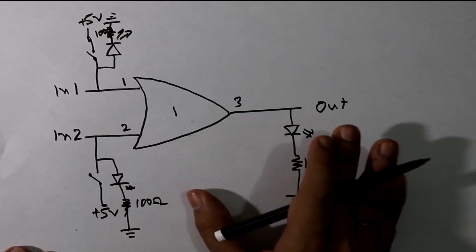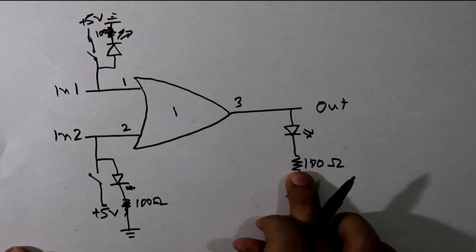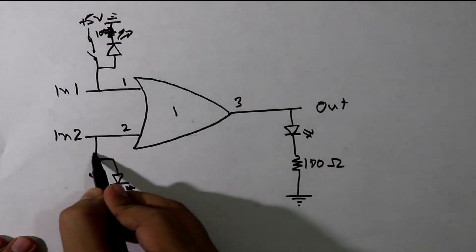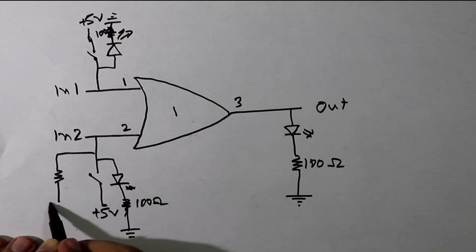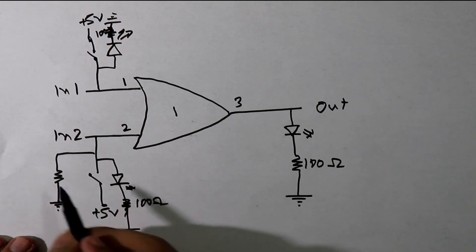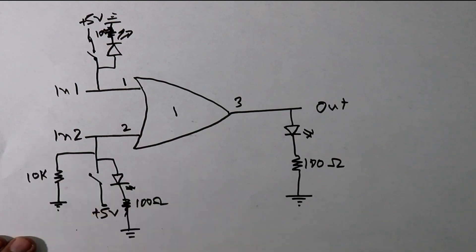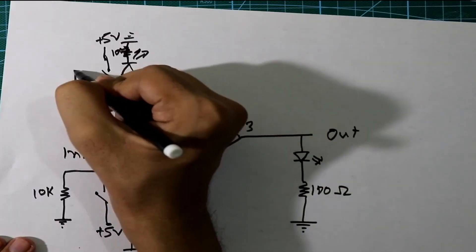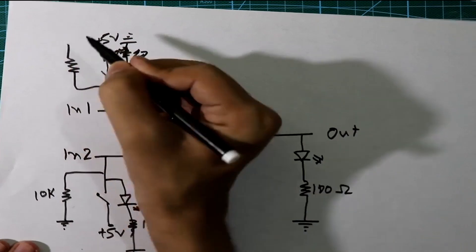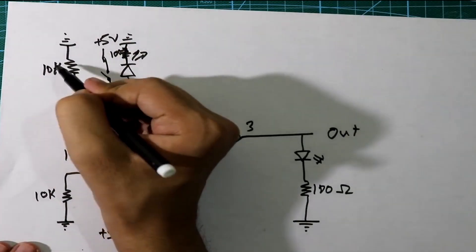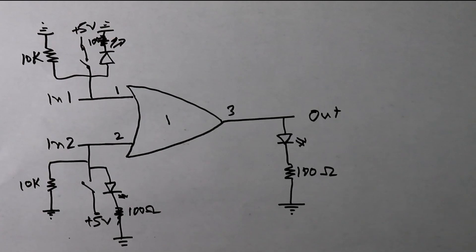Up to this we have completed but we are getting output without pressing the switch. So we have to connect one more resistor here and connect it to the ground. It is called pull down resistor. And value should be not less than 10 kilo ohms. So we will apply 10 kilo ohms. For this input also, we have to connect one resistor here and connect it to the ground. And the value not less than 10 kilo ohms.